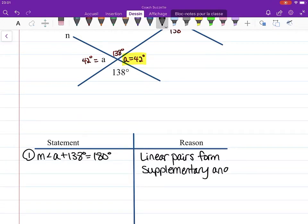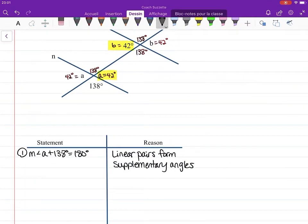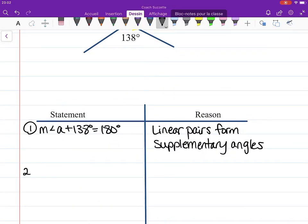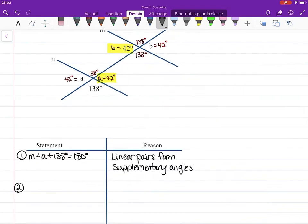Supplementary angles. And let's also note how we got b—well, because they were vertical angles.